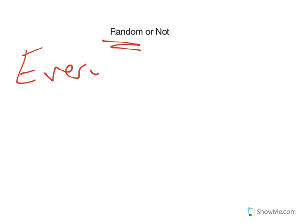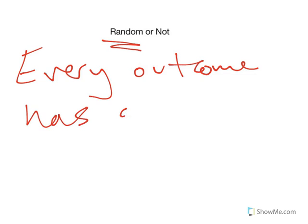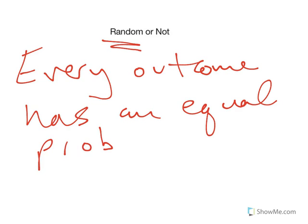Welcome back. In this video, what we're going to talk about is what it means for something to be random. Random is a very important term, and it's a term that's used improperly a lot. When something is random, it means that every outcome has an equal probability of occurring.